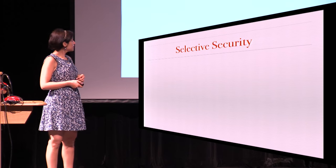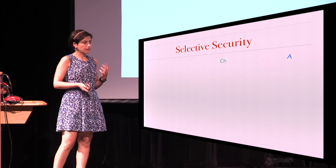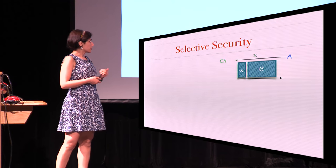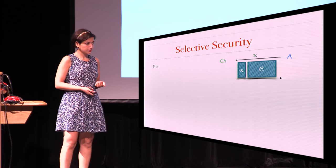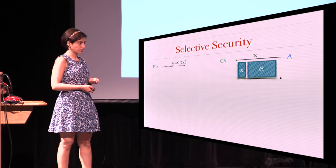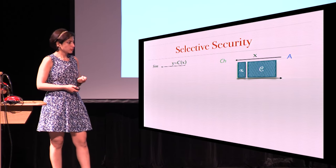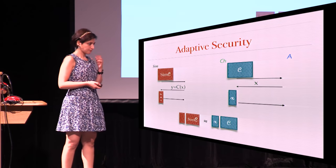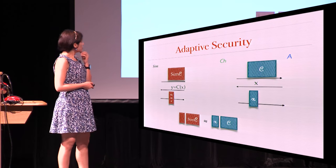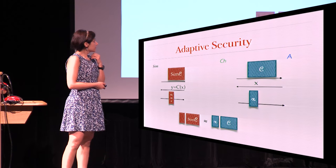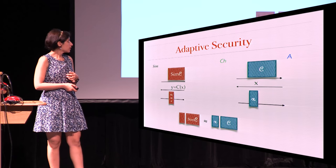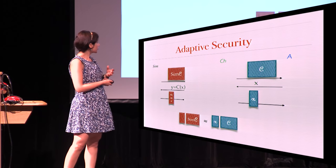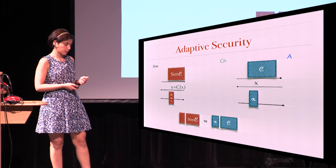When it comes to security, we have two definitions. The selective version: we have our adversary and the challenger, the adversary picks an input, and gets back the garbled circuit and the garbled input. The system is secure if there is a simulator that gets only the output of the computation and can simulate the garbled circuit and garbled input, and we want these two distributions to be indistinguishable for any circuit. For adaptive security, we just change the game a little bit — the adversary gets to choose the input after seeing the garbled circuit, and the simulation needs to output the simulated garbled circuit before seeing anything, and then gets the output of the computation.